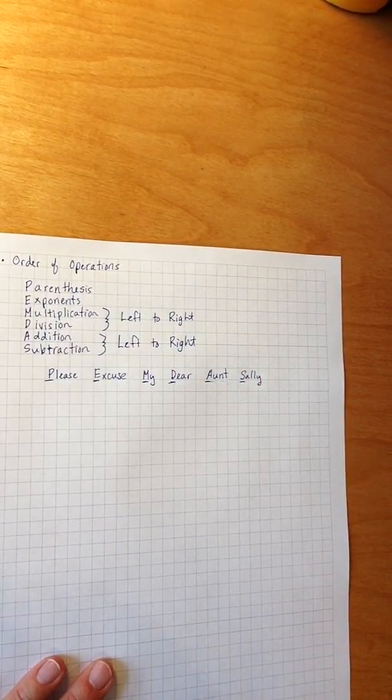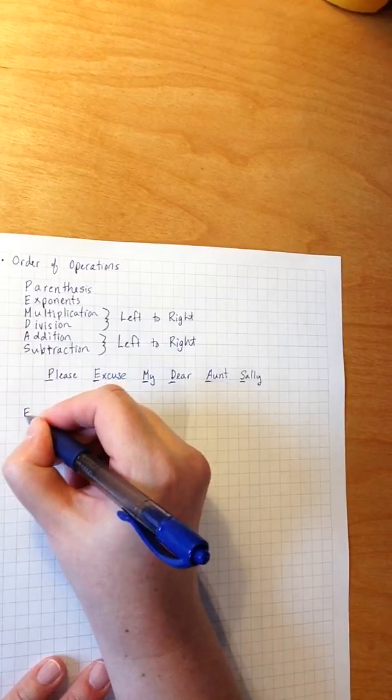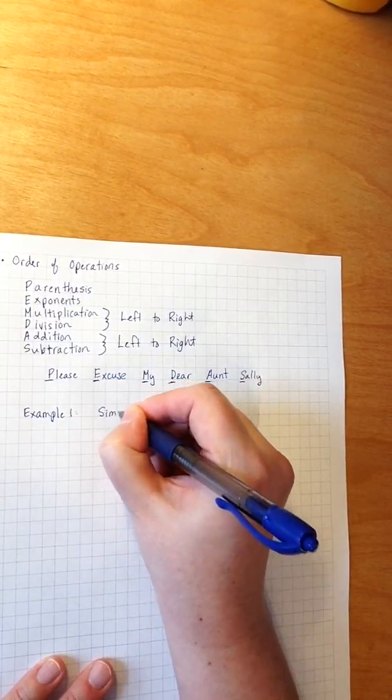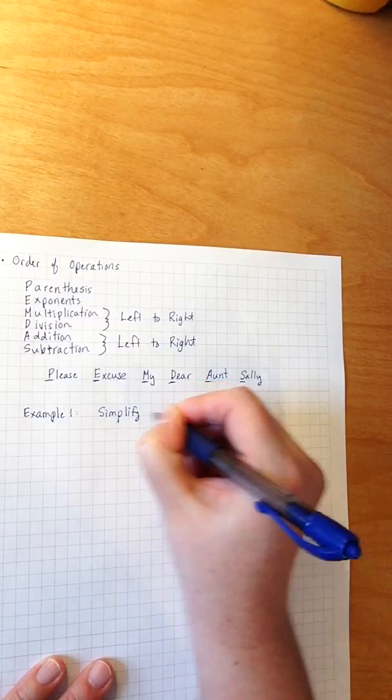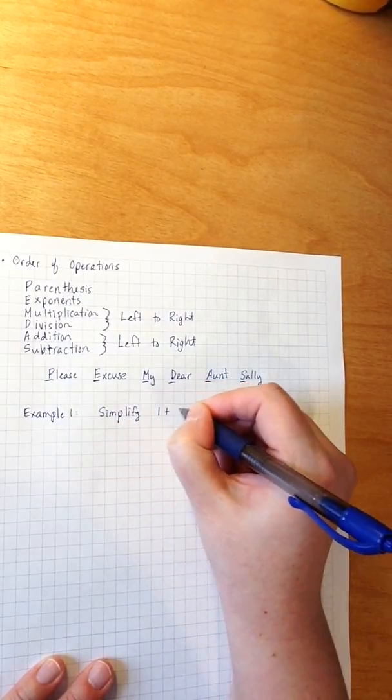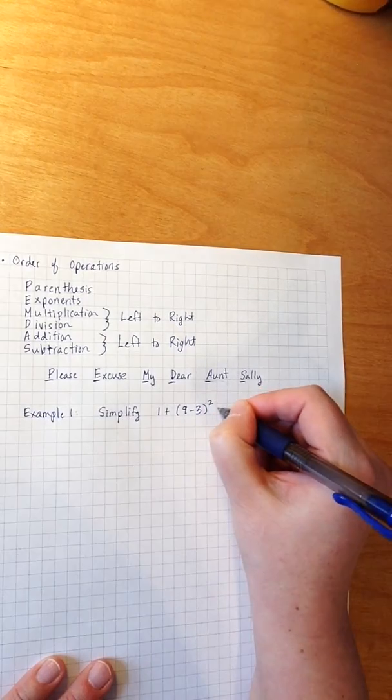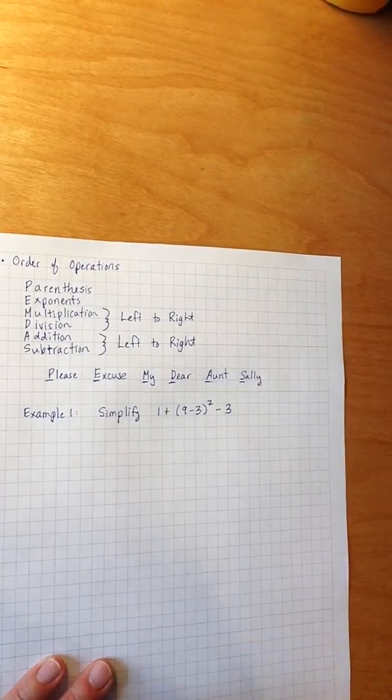So let's look at an example. Simplify 1 plus parentheses 9 minus 3 quantity squared minus 3.